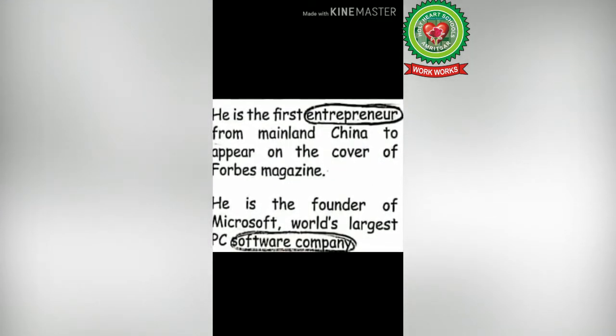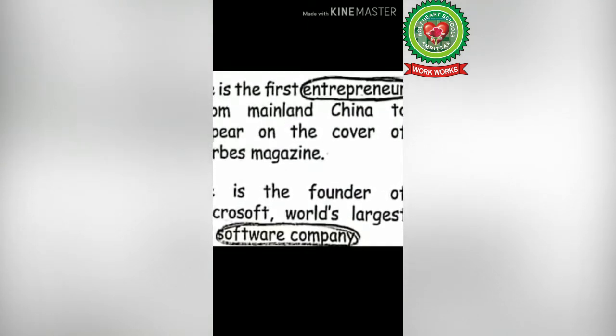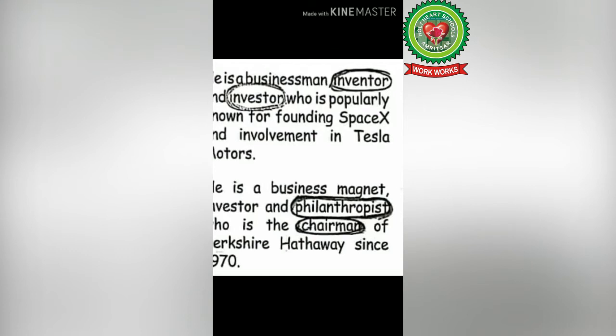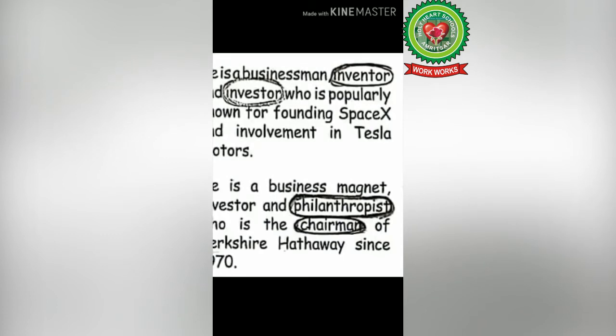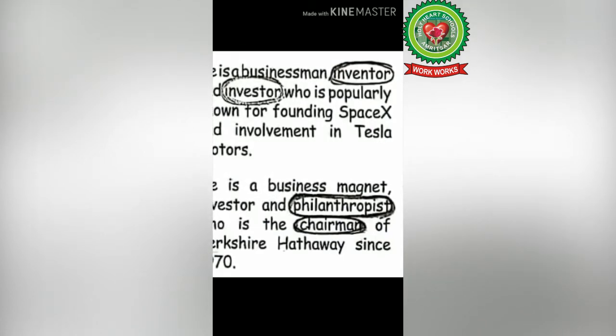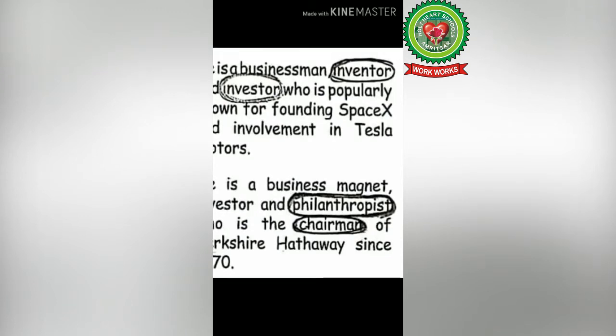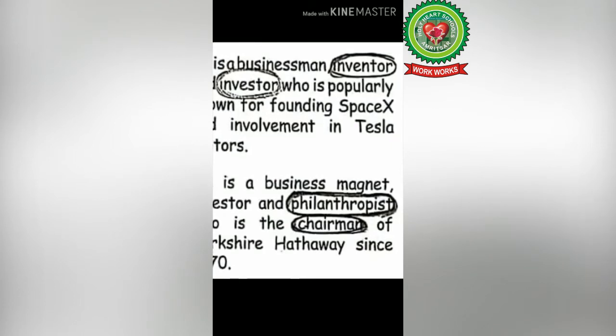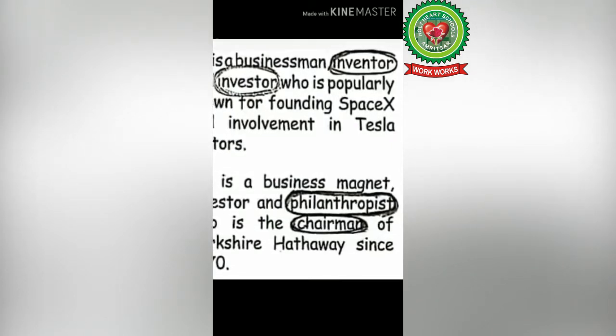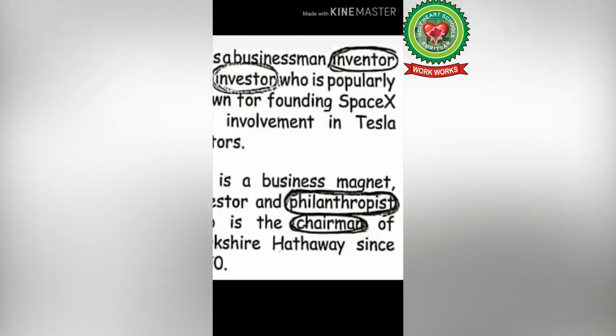The next word is 'founder', a person who starts a new organization. The next word is 'entrepreneur', a person who makes money by starting a business. The next word is 'software company', a company whose products are various forms of software. The next word is 'inventor', someone who has invented something. Then 'investor', a person who puts money into something in order to make a profit. The next word is 'philanthropist', a rich person who helps the poor by giving money. And the last word is 'chairman', the head of a company.